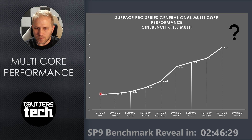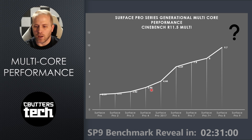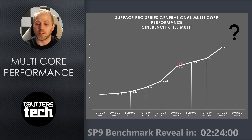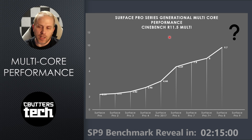On multi core, we were stuck on two cores for a long time on the Surface Pro series. Surface Pro 1 and 2 had tiny uplifts. Surface Pro 4 had a pretty massive uplift up to 3.46. Surface Pro 5, the 2017 model, went to 4.44. Surface Pro 6 finally got quad core and you see a massive uplift that brought us to 6.69 on Cinebench R11.5 multi.